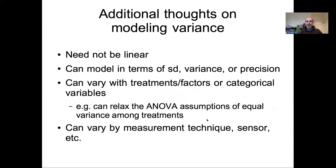A few additional thoughts on modeling variance: here we assumed the standard deviation changed linearly as a function of x, but like the process model on x, the process model on sigma does not need to be linear — it could take various nonlinear forms. We could write the model in terms of standard deviation, variance, or precision. We can also make our variance change not just with continuous variables like x, but with treatments, factors, or other categorical variables, allowing us to relax the classic ANOVA assumption of equal variance among treatments.